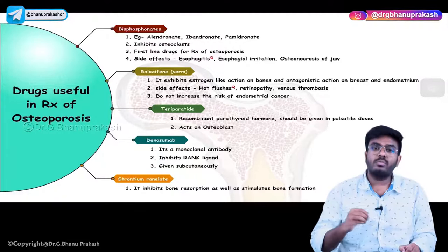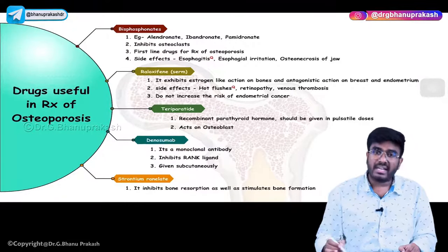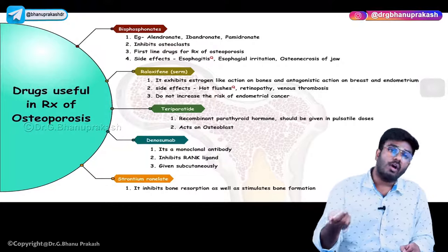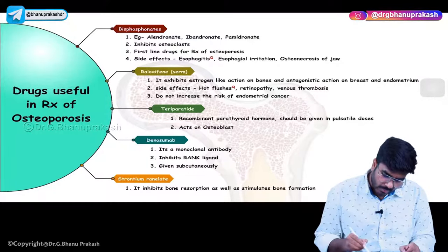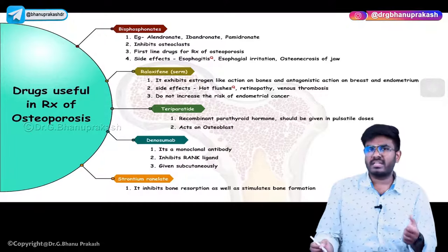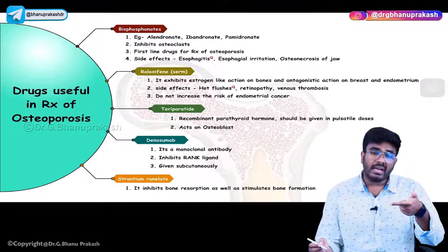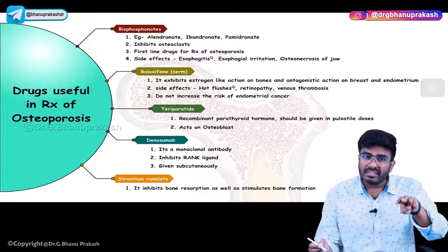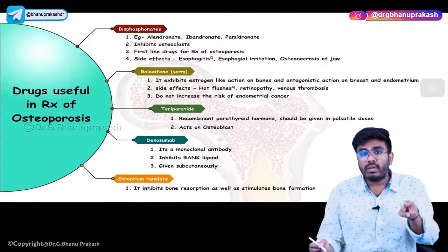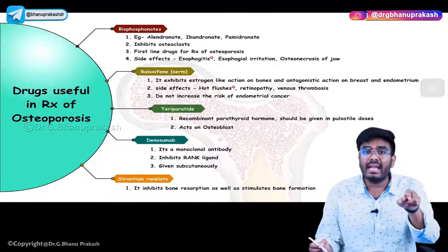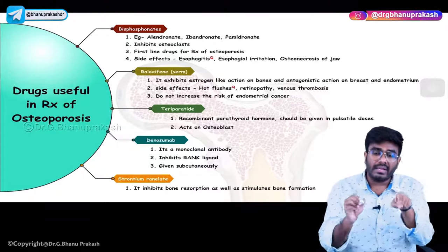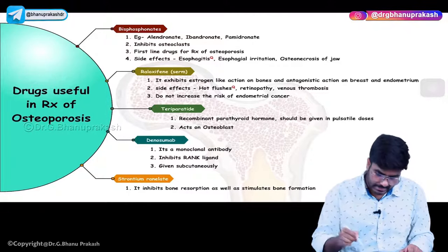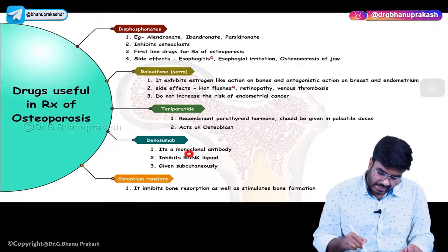Denosumab is another drug — the '-mab' suffix tells us it is a monoclonal antibody. Denosumab is a monoclonal antibody that inhibits RANK ligand. As seen earlier, when osteoblasts are continuously stimulated by PTH, they produce RANK ligand, which activates osteoclasts. By producing an antibody against RANK ligand, RANK ligand is neutralized, osteoclasts cannot be activated, bone resorption cannot happen, and osteoporosis is treated. Denosumab is given subcutaneously.